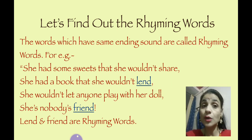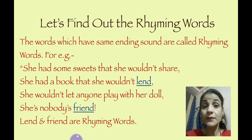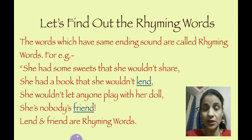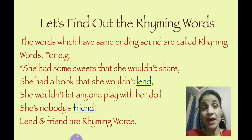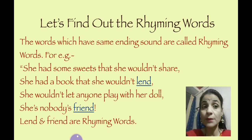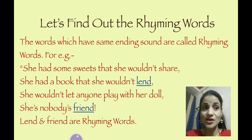Now let's find out the rhyming words in this poem. The words which have the same ending sound are called rhyming words. Let's take an example from this poem: 'She had some sweets that she wouldn't share. She had a book that she wouldn't lend. She wouldn't let anyone play with her doll. She is nobody's friend.' So here, what are the rhyming words? 'Lend' and 'friend.'